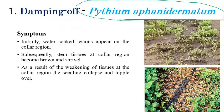The symptoms are mainly seen initially at the collar region. Initially, water-soaked lesions appear at the collar region, and slowly this infected region starts softening and weakening at the collar region or the lower region. Due to that, the seedlings collapse — seedlings fall down or topple over. Incomplete growth of plants can also be seen clearly.